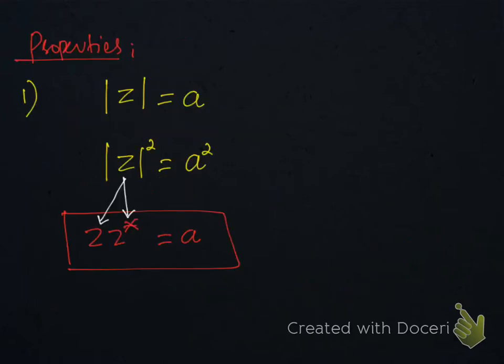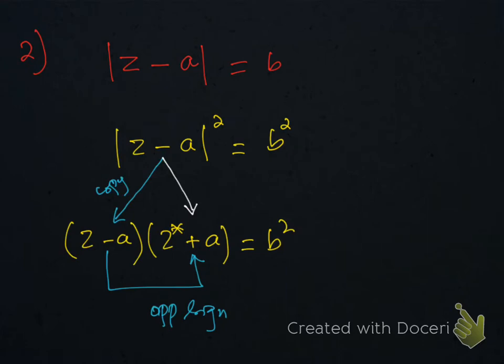Properties of modulus. As you know, we remove modulus by squaring. So on squaring both sides we have z square equals a square and this can be written as z times z star. And z star is the complex conjugate. Since complex numbers always exist in pair form, therefore we have two roots. One is z and the other one is z star. We have the complex conjugate of z.